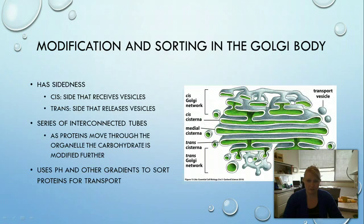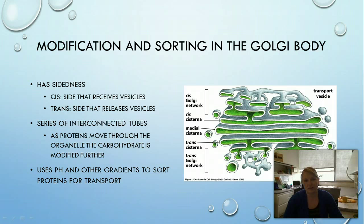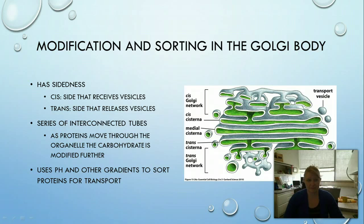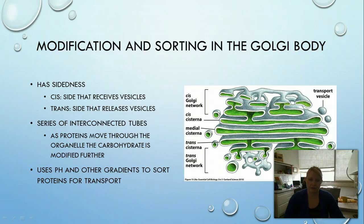After leaving the ER, proteins head to the Golgi body — our main shipping warehouse — where the Golgi separates and sorts them. The Golgi has sidedness, meaning vesicles only enter from the cis side and always exit on the trans side. There are a series of interconnected tubes with pH and other gradients that help separate proteins based on their physiological traits, directing them into the proper vesicle to be sent somewhere else. The glycosylation and other modifications begun in the ER continue to be modified here in the Golgi.